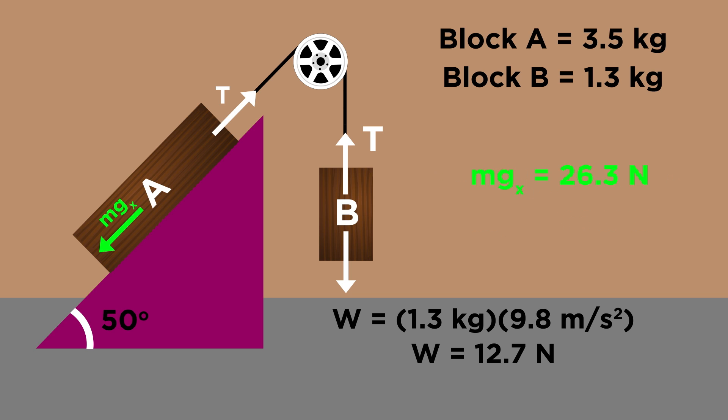So we have a 26.3 newton force pulling block A down the ramp. That means this is also the tension pulling block B up. And as we said, 12.7 newtons is the force pulling block B down, and therefore also the tension pulling block A up the ramp.